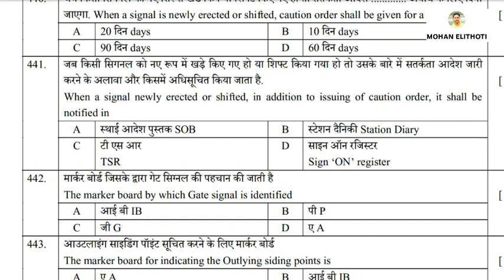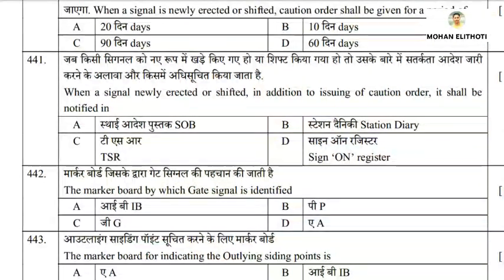Good morning to one and all. Welcome to LDCE exam series. Coming to question number 441: when a signal is newly erected or shifted, in addition to issuing a caution order, it shall be notified. As we discussed in the previous video (question 440), locopilots must be cautioned for 90 days. In addition to the caution order, it is also notified via VT and SOB (Standard Order Book).